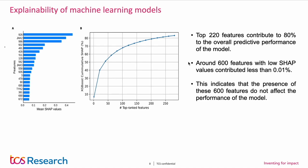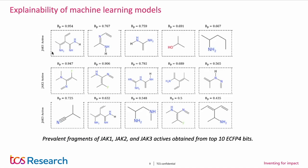Next, we further analyzed the top 10 ECFP4 bits from the SHAP method to identify prominent substructures for each target based on the RP score. The first row represents the important fragments identified by the model for JAK1 protein, the second and third rows corresponding to JAK2 and JAK3 respectively. A similar analysis was carried out for the homologues of the dopamine receptor family, where active and inactive fragments were identified for all five homologues.